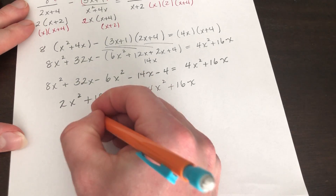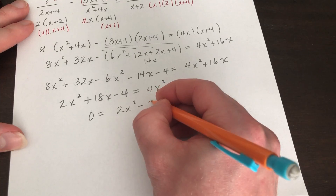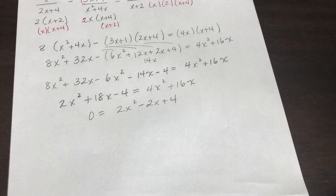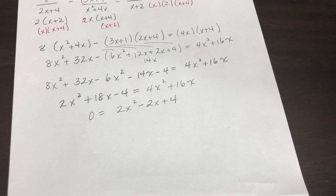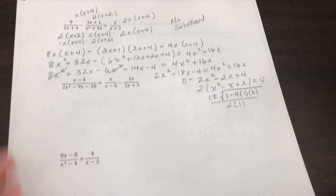Moving everything over: 0 is equal to 2x squared minus 2x plus 4. Double-checking in the graph, nothing crosses — so the answer is confirmed as no solution. It comes out to be the same thing as before; I must have typed something in the calculator wrong earlier.